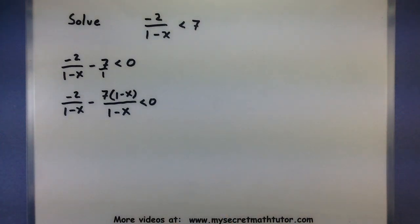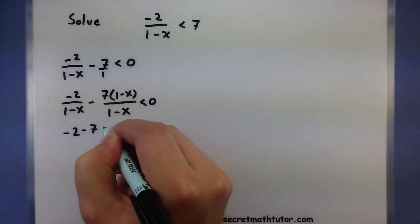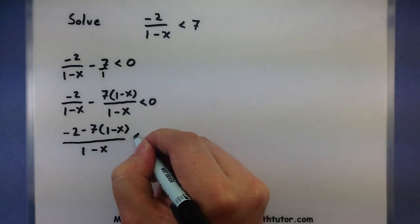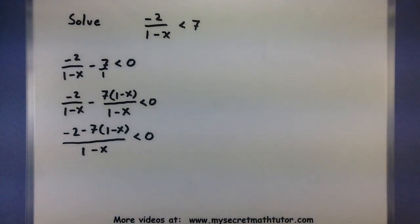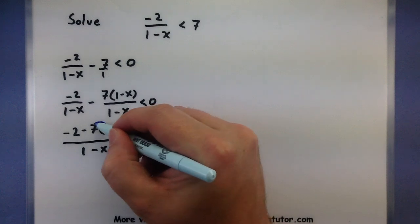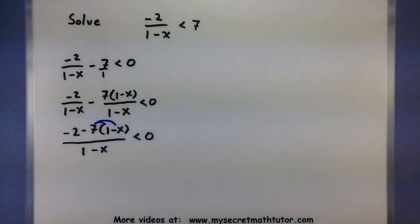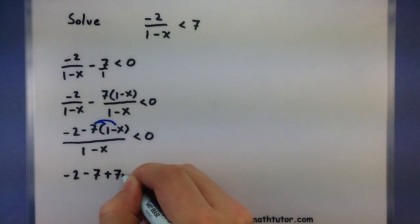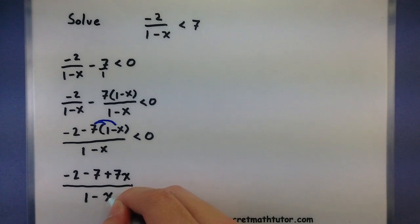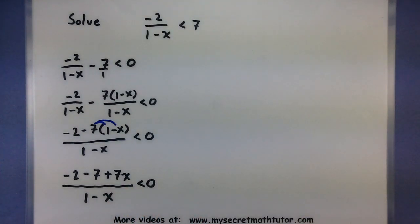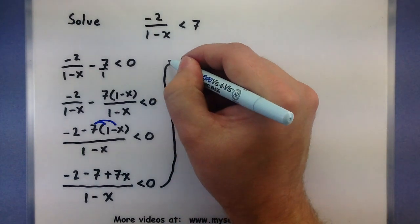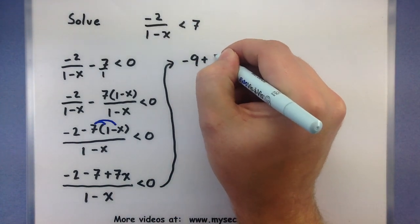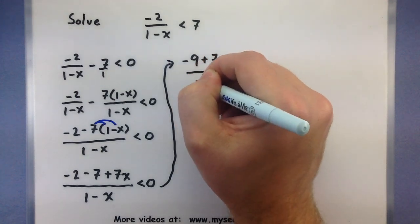Now that they have the same denominator, let's put the tops together: negative 2 minus 7(1 minus x), all over (1 minus x). We need to distribute the negative 7 in. That gives us negative 2 minus 7 plus 7x. Combining: negative 2 and negative 7 gives negative 9, and we have positive 7x, all over (1 minus x).